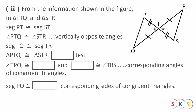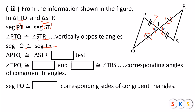From the information shown in the figure, in triangle PTQ and triangle STR: side PT is congruent to side ST — they got a same kind of mark. Angle PTQ is congruent to angle STR because they are vertically opposite angles. Side TQ is congruent to side TR — they got a same kind of mark. Therefore these two triangles are congruent by Side-Angle-Side test.